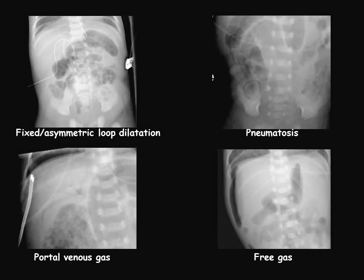In summary, the findings you'll be searching for in a patient suspected of having necrotizing enterocolitis are fixed loop dilatation, asymmetric loop dilatation, pneumatosis, portal venous gas, and free gas. Remember, once you see free gas, that is an indication for surgery. Thank you very much.